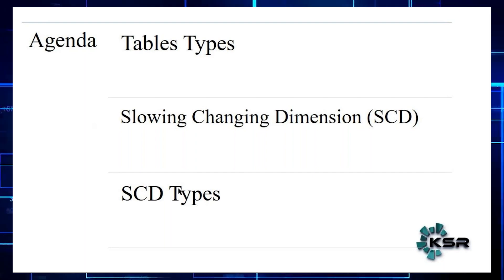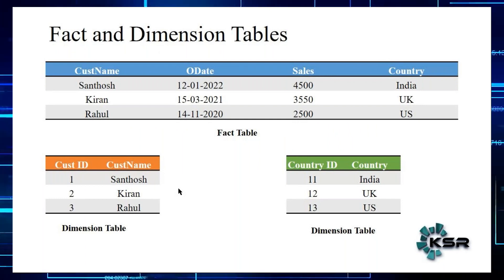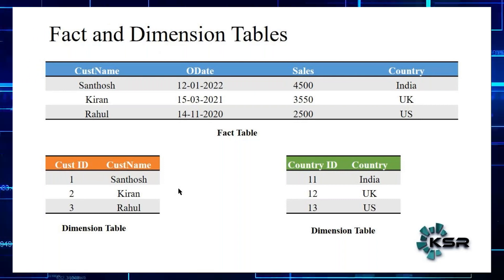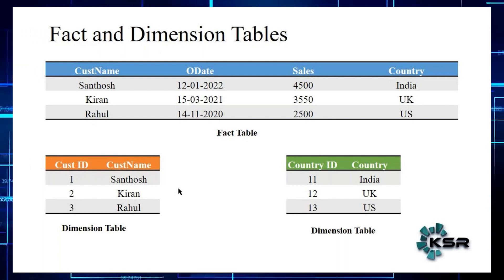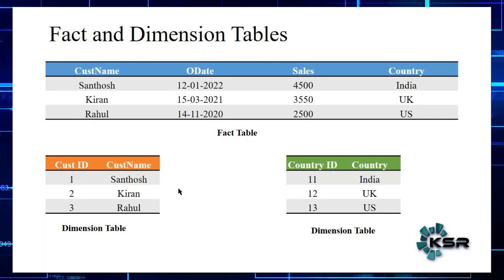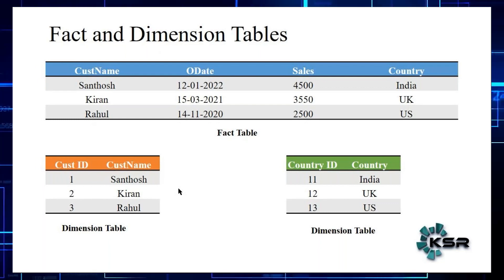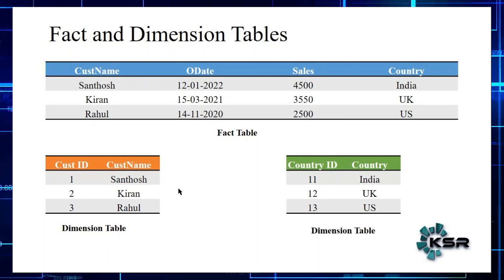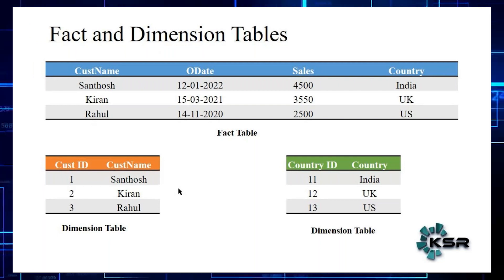First we need to understand what is a fact table and what is a dimension table. If you look at the top portion, we have a table which consists of customer name, order date, sales, and country. The table which consists of actual business measures, calculations, or numbers we call a fact table. Here the main column is sales — it could be profit, discounts, or revenue. The table which consists of actual business measures is called a fact table.